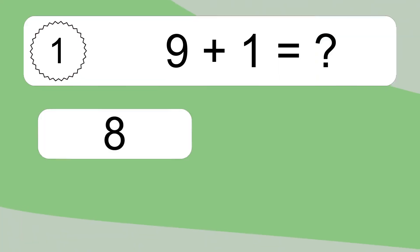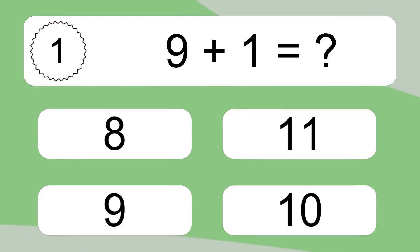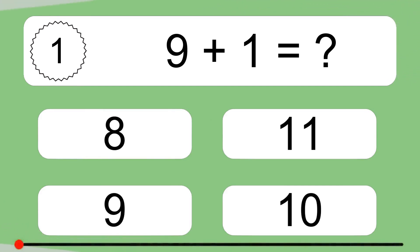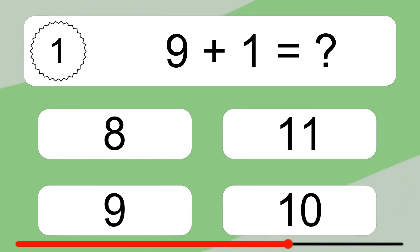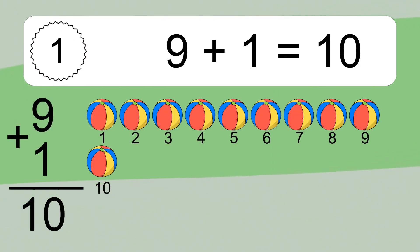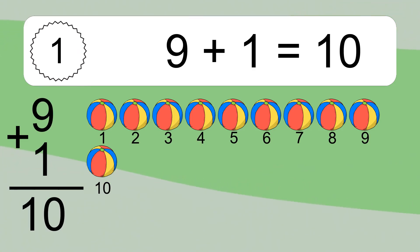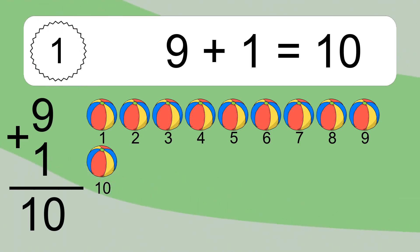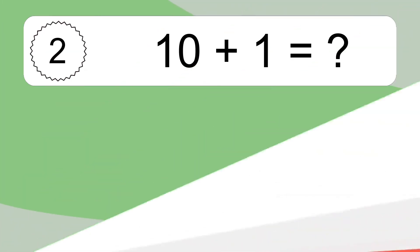9 plus 1 equals what? 9 plus 1 equals 10. Let's count it: 1, 2, 3, 4, 5, 6, 7, 8, 9, 10.